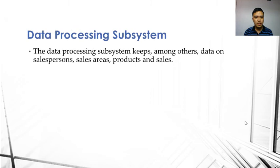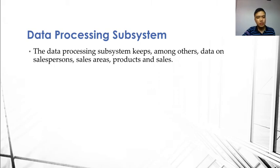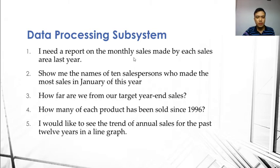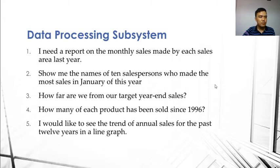The first is the data processing subsystem. It keeps data on salespersons, sales areas, products, and sales. Some example reports we can generate from this subsystem include: a report on the monthly sales made by each sales area last year; the names of the top 10 salespersons who made the most sales in January of this year; how far we are from our target year-end sales; how many of each product has been sold since 1996; and the trend of annual sales for the past 12 years in a line graph.